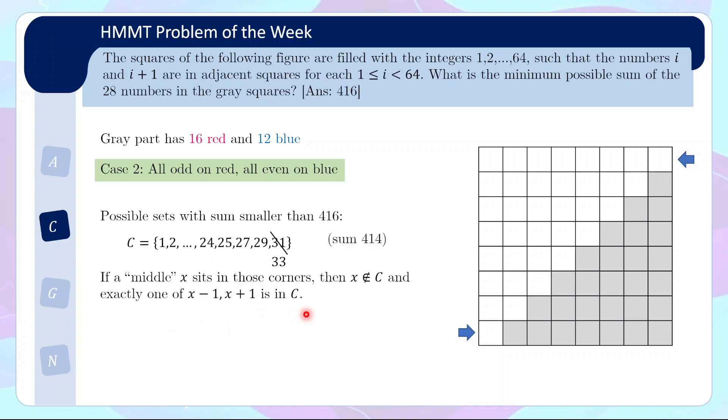Set C is slightly more interesting. This time, if we want to look for a number not in C, but exactly one of its plus minus 1 is in C, we have more options actually. This time the number 30 also works, because 30 is not inside, but 29 is and 32 isn't. The number 32 and 34 are also possible candidates. So we have 3 possible candidates.